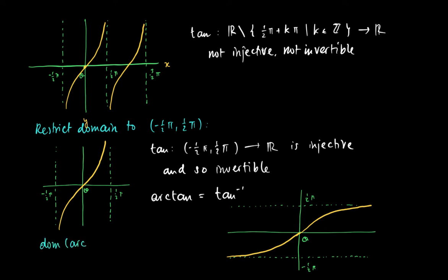Where we formerly had vertical asymptotes at one-half pi and minus one-half pi, now we get horizontal asymptotes at one-half pi and minus one-half pi. The domain of the arc tangent is R, which is the range of the tangent, and the range of the arc tangent equals the domain of the restricted tangent function, which is the open interval (-π/2, π/2).